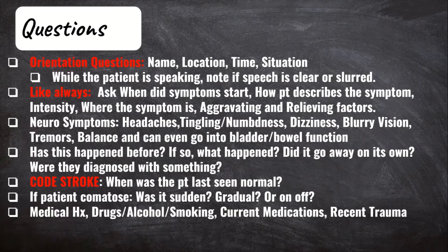When did the symptoms start? How does the patient describe them? Where are the symptoms? What makes it better and what makes it worse? You can also ask about specific neural symptoms that can accompany their complaint — these can include headaches, dizziness, blurry vision, tingling, and numbness. Do we have tremors, balance or coordination issues, and even bladder and bowel function issues?